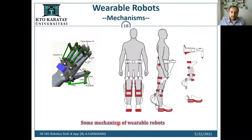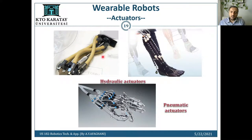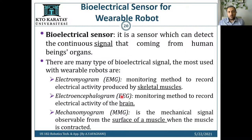Looking at mechanisms, here is a wearable robot for the hand — you can see many links and actuators. This is a lower extremity exoskeleton mechanism — it has three parts and the red part is the wearable section. For actuators, the hydraulic type uses oil pressure to move, and the pneumatic type uses air pressure to move the robot or motors.